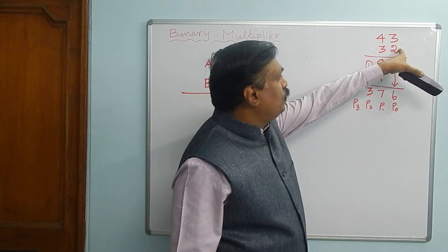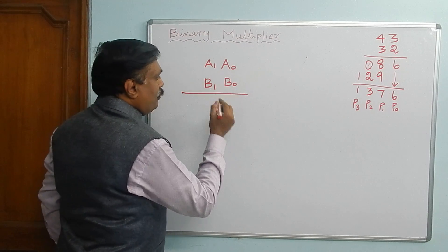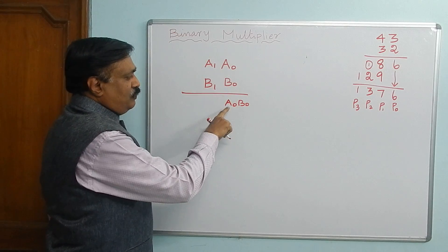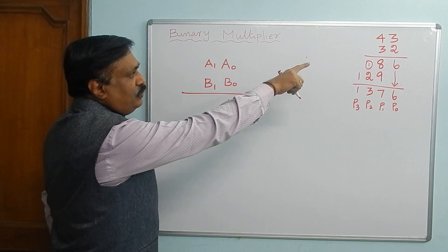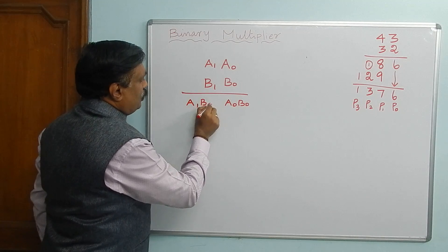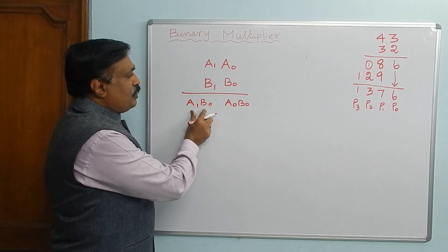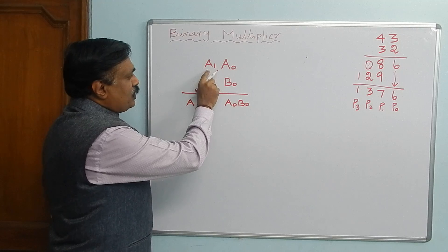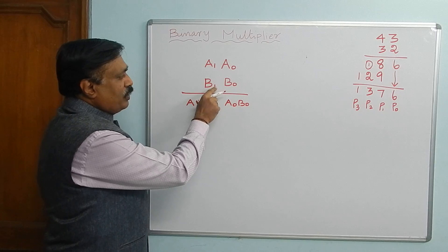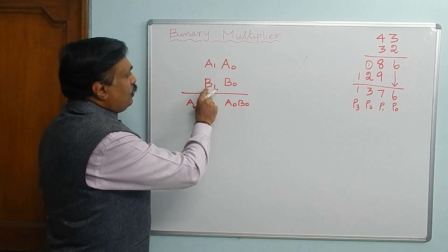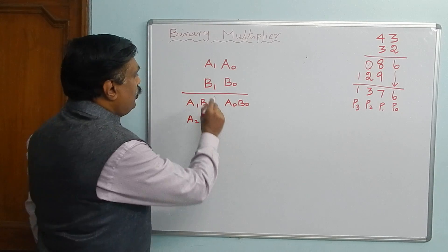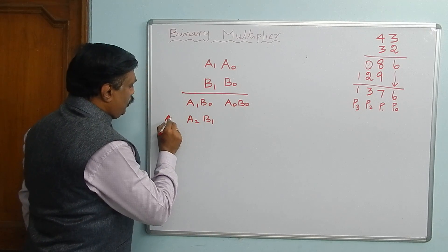Just listen. Here, 3 into 2 gives 6 — instead of writing the number I am going to write A0 multiplied by B0. So the product is A0·B0. Second, 2 is multiplied by 4 — here B0 is multiplied with A1, giving the product A1·B0. So A0·B0 and A1·B0 are the two partial products, just like 86. Now we have to multiply by B1, giving A0·B1 and A1·B1.